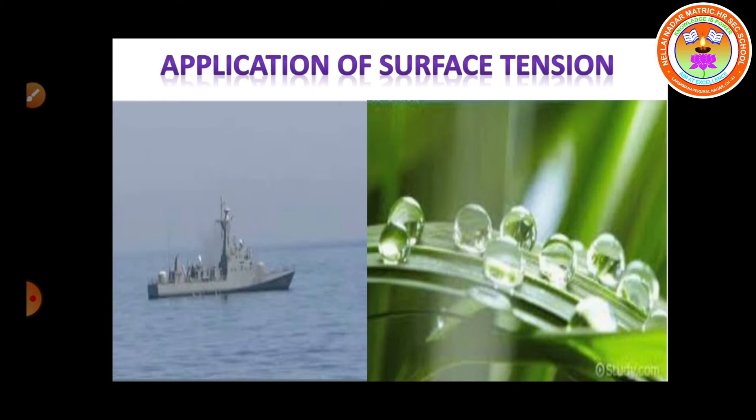The surface of the liquid behaves like a stretched membrane, which is called an elastic membrane. Surface tension is a property of a liquid due to which it tends to decrease or minimize its surface area. So the rain drops take a spherical shape because for a given volume, the surface area of a sphere is the minimum. This is the reason liquid drops occur in spherical shape.